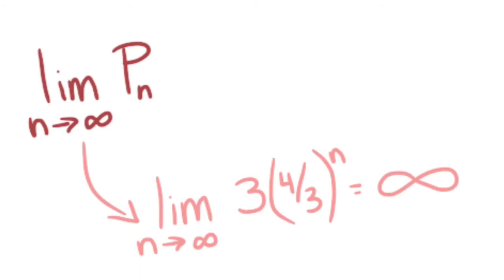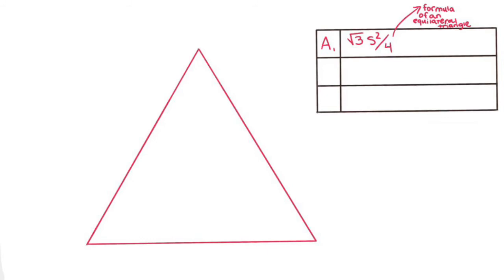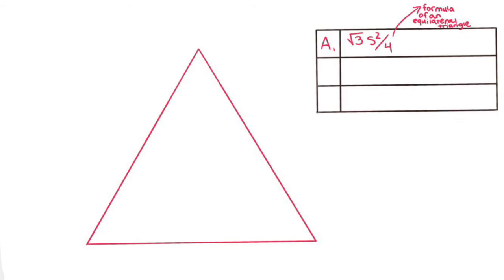The area of a Koch snowflake is a little more intricate. Starting with our base equilateral triangle, we know the area formula is the square root of 3 times s squared over 4. When we move on to the next layer, we are adding three new triangles, each with an area of square root of 3 times s over 3 squared all over 4.